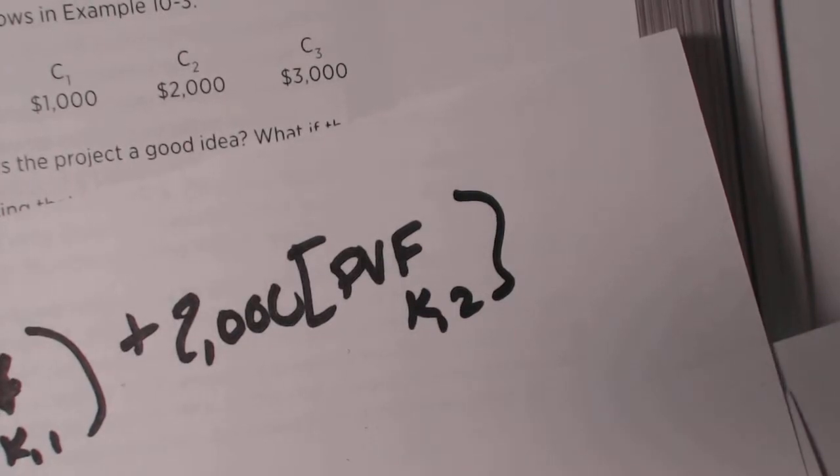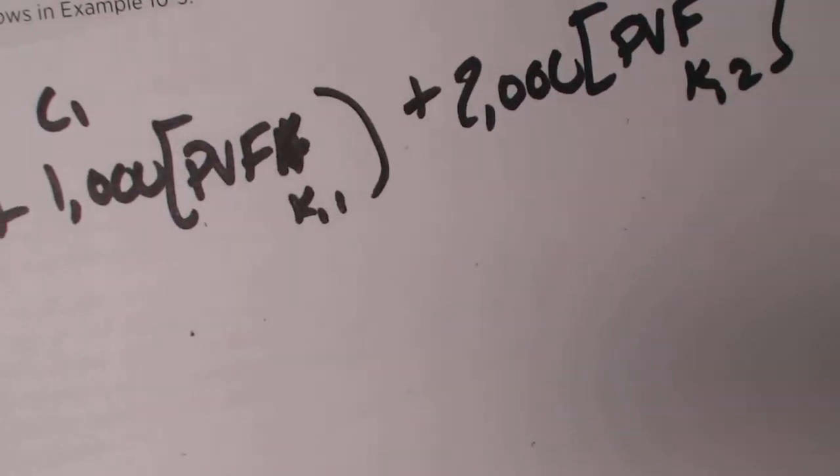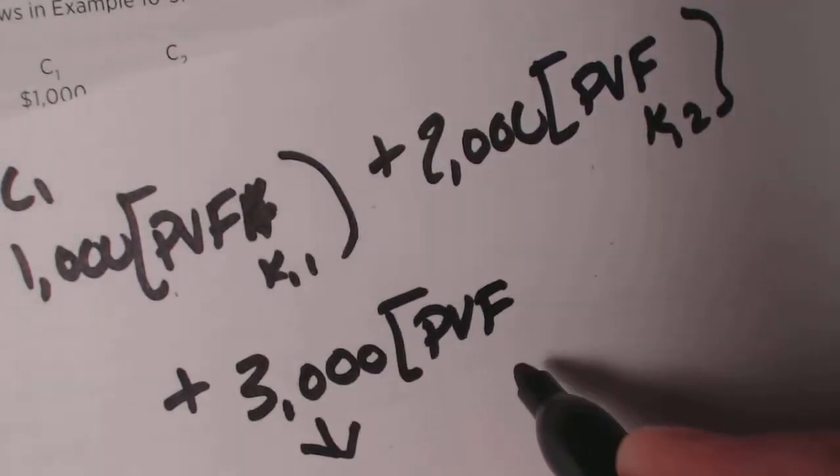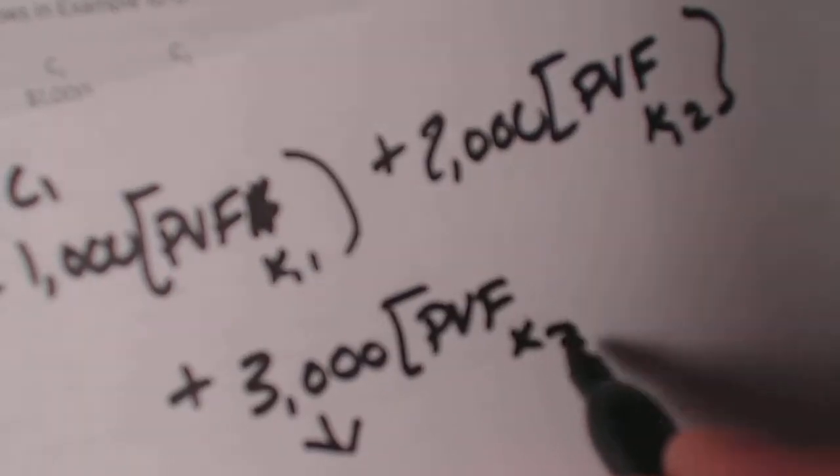And then here would be $2,000 PVF, sorry there's no A on the end here, PVF, sorry K2. So that's my bad, there's no F on the end, there's no A in the end. Plus, our next number is $3,000 because that's C3. So this is C3, and it would be PVF K3.